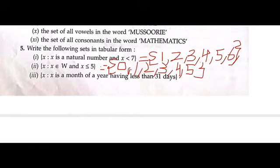Now the third part: x where x is a month of the year having less than 31 days. You already know which months have less than 31 days, so let's write. It will be February (F-E-B-R-U-A-R-Y), which has 28 days, then you have April.